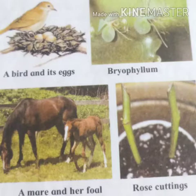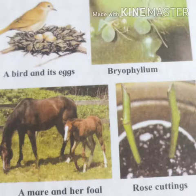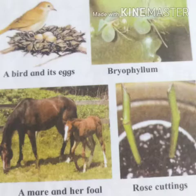Different animals reproduce in different ways. Some animals lay eggs — birds, for example, lay eggs. Some animals come from the mother's stomach, like human beings. In plants, new plants are developed from seeds and stems. These are some examples of reproduction, which is a characteristic of living things.